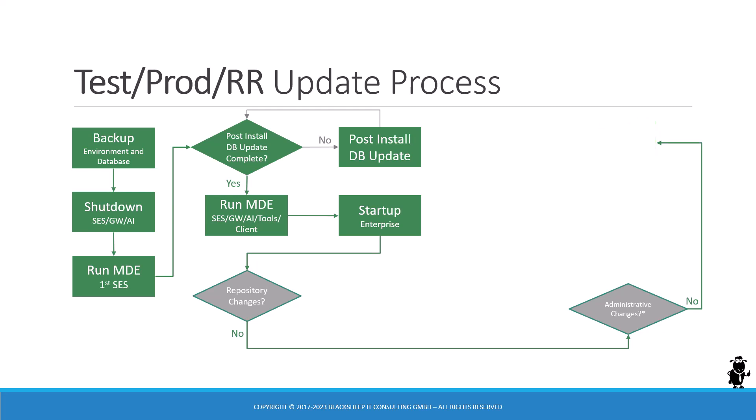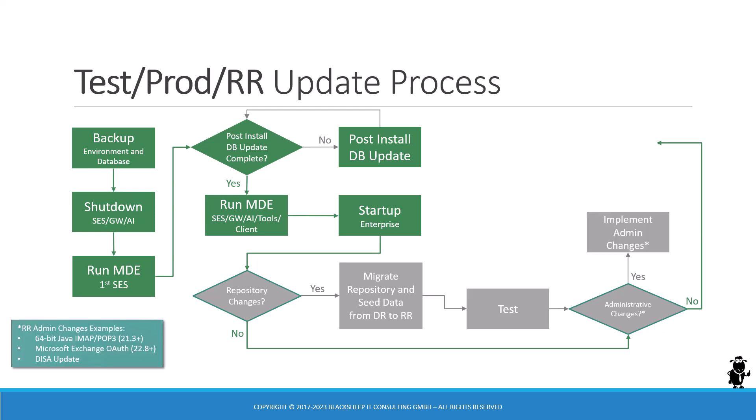The longer path is if you had repository changes — you need to fire up the migration application to migrate the repository, and don't forget seed data changes from the development to the RR environment. Make sure you test that thoroughly. If you have any administrative changes depending on your implementation, you have to implement those as well. And then you're done with the update of a test or production environment.